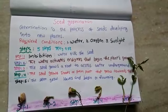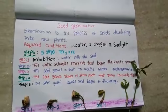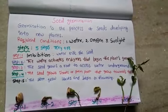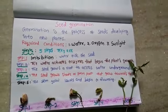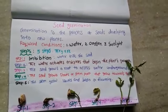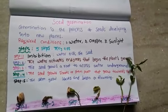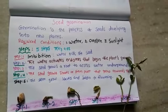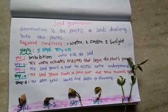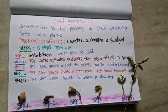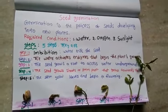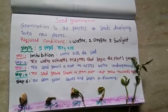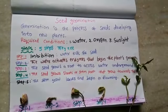What is seed germination? Seed germination is the process of seeds developing into new plants. In seed germination, we observe five steps. What are they? The first step is imbibition.